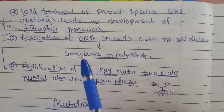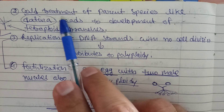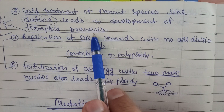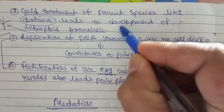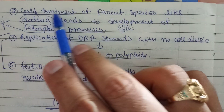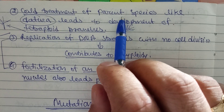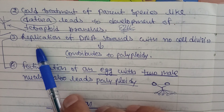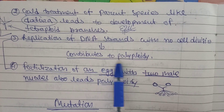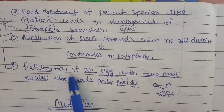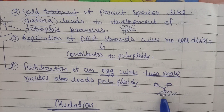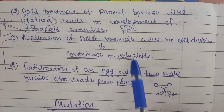The second technique is cold treatment of parent species. Cold treatment of Datura leads to the development of tetraploid branches. The plant will produce different types of branches, giving a good percentage yield. Third, replication of DNA strains within the plant with a number of cell divisions may occur, which contributes to polyploidy. Fourth, fertilization of an egg with two male nuclei also leads to polyploidy.